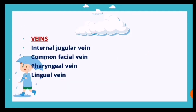The veins in the carotid triangle include the internal jugular vein, the common facial vein, the pharyngeal vein, and the lingual vein - all of which ultimately drain into the internal jugular vein.